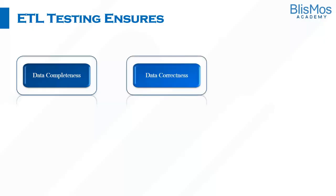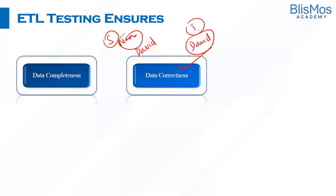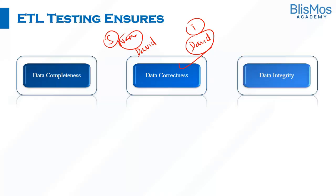ETL testing also ensures the data is correct. For example, assuming there is a name 'David' in the source, the name in the target also needs to be 'David' if there is no transformation involved. ETL testing ensures the data is accurate — there should not be any misspellings and there should not be any null values where a value should be present.